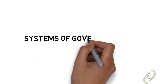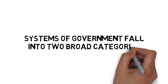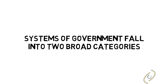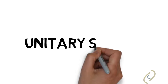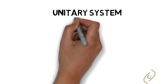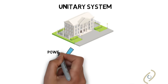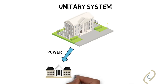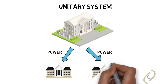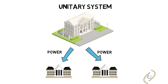Systems of government in most countries fall into two broad categories. One is called a unitary system. In this system, power resides with a central government in one place. The central government may create or abolish regional governments and has the sole authority to delegate responsibilities such as education, health, and policing.